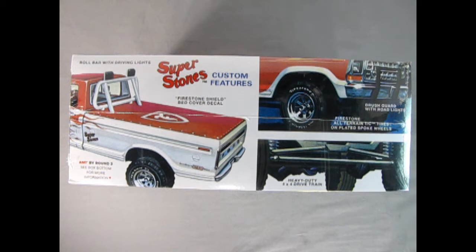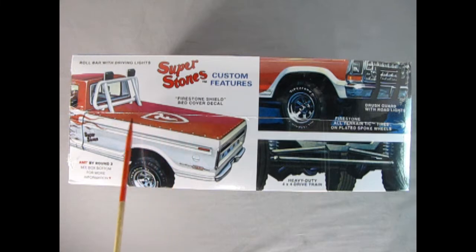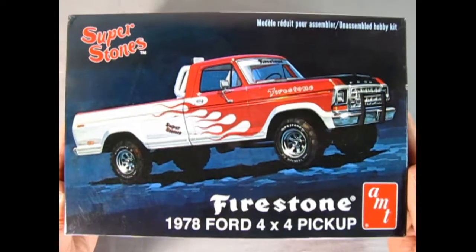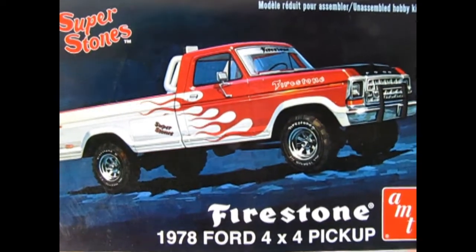On this side of the box we can see more of the features like the roll bar with the driving lights, the Firestone shield bed cover decal, as well as the Firestone all-terrain tires mounted on plated spoke wheels and the heavy duty 4x4 drivetrain. And now let's open up the lid on the box and check out what's inside.